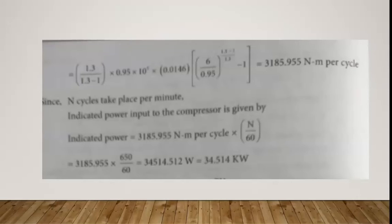The work per cycle is 3185.955 Nm per cycle. The indicated power input to the compressor is then calculated as work per cycle multiplied by the number of cycles per second. The answer is 34.514 kW.